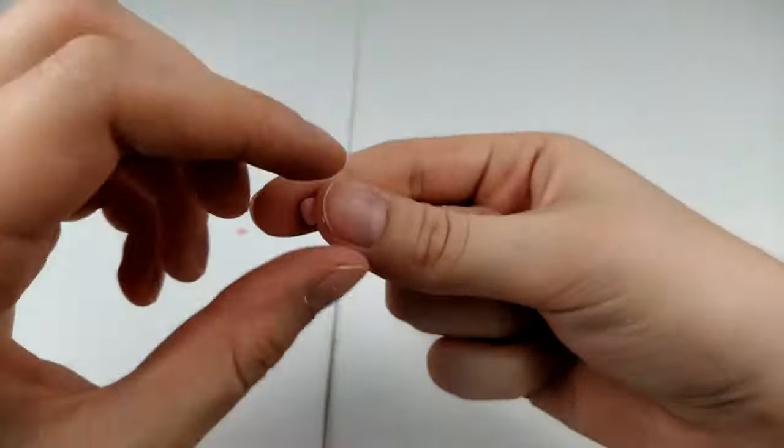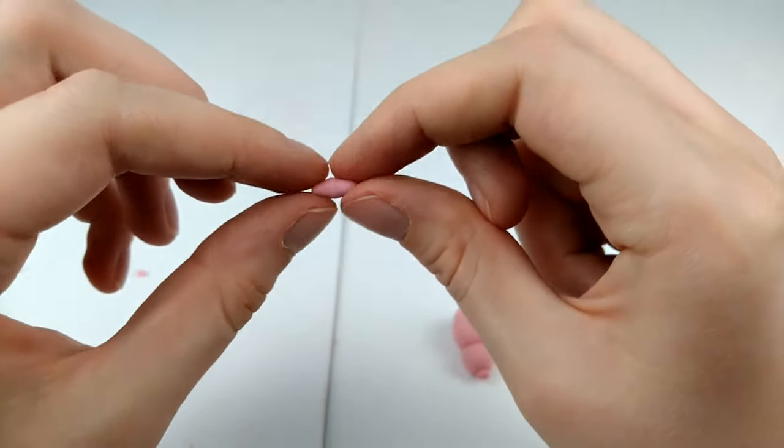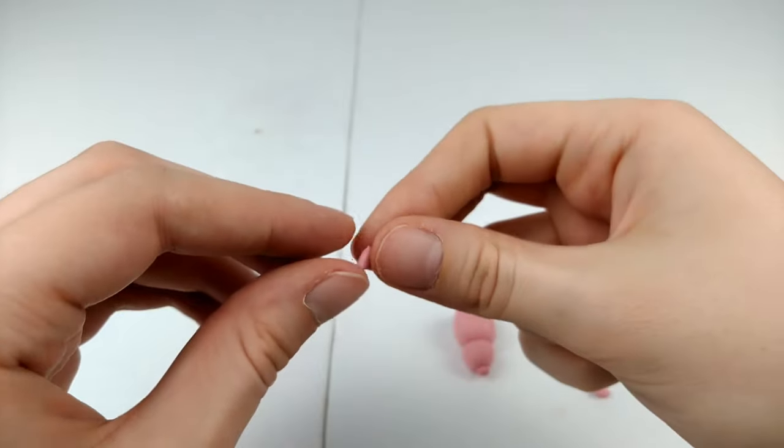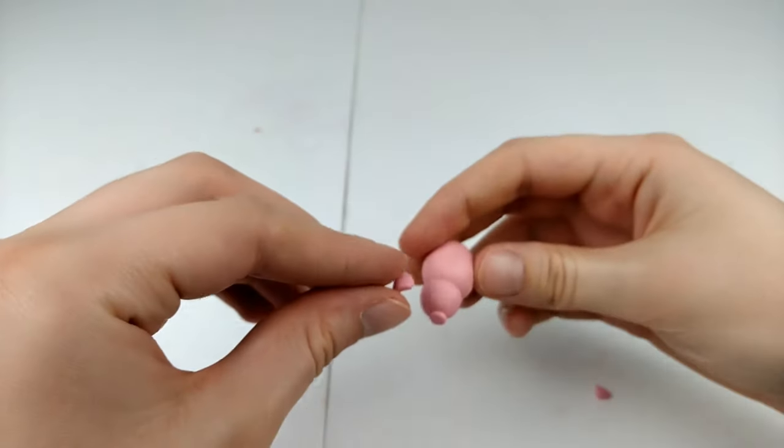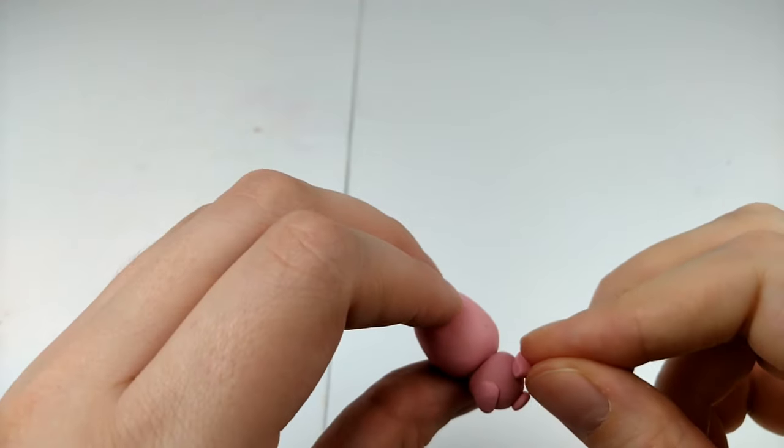All right and for the pig's ears, we're going to be taking a ball of clay, rolling out the ends into two cone shapes, cutting them down the middle, slightly flattening them out, and then putting them on the pig's head.